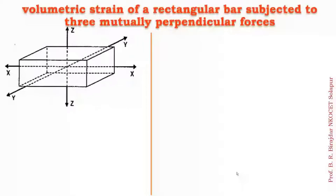In the last lecture, we had seen the volumetric strain of a rectangular bar subjected to a force acting in only one direction. But today we are going to see three mutually perpendicular forces — the force applied in the x direction, the force in the y direction, and the force in the z direction. So with forces in all three directions, what is the volumetric strain?